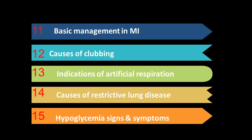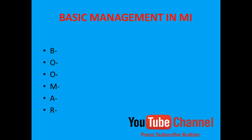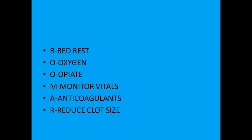The remaining five mnemonics cover: basic management in MI, causes of clubbing, indications of artificial respiration, causes of restrictive lung disease, and hypoglycemia signs and symptoms. For basic management in myocardial infarction, the mnemonic is BUMAR. B for bed rest, O for oxygen, O for opiate, M for monitor the vitals, A for anti-coagulants, and R for reduce clot size.